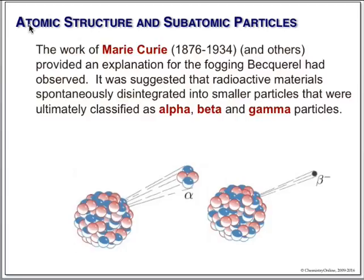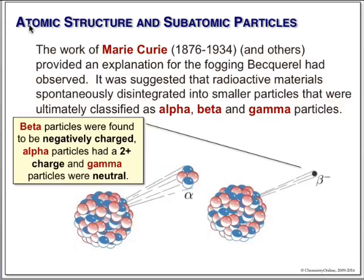Marie Curie was given most of the credit for actually figuring out what happened. She died from it, which was a bad thing, because they were working really unprotected with lots and lots of very radioactive stuff. What they decided was that there were three forms of radioactivity associated with these elements.